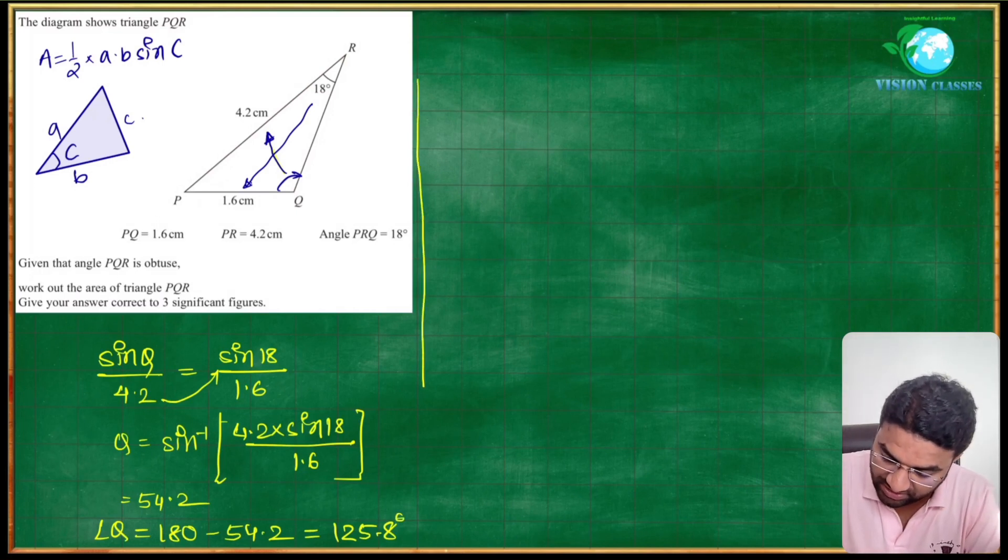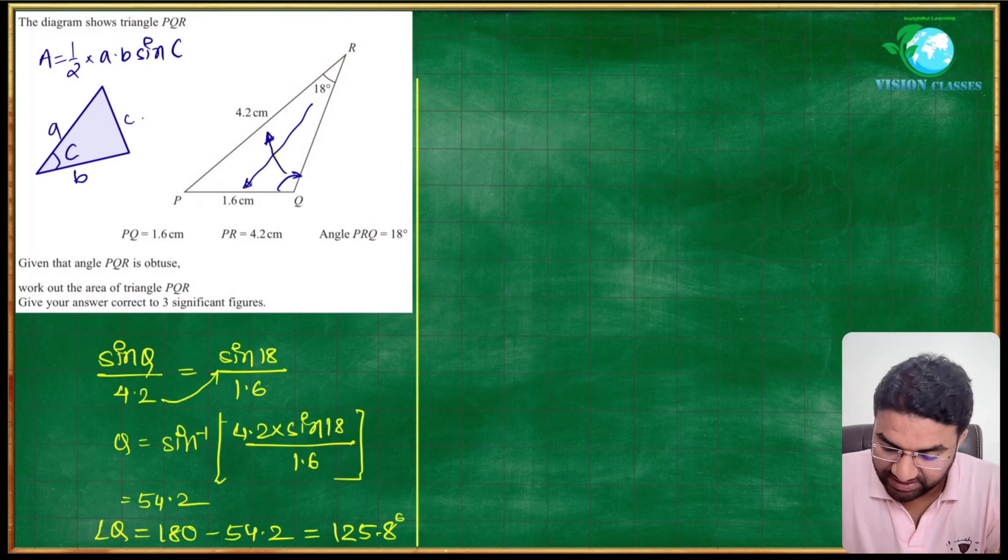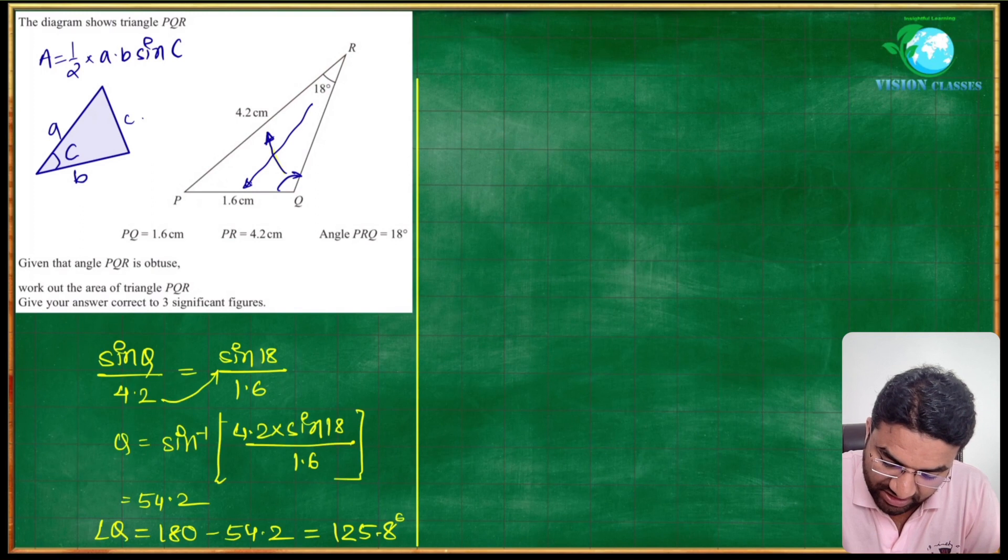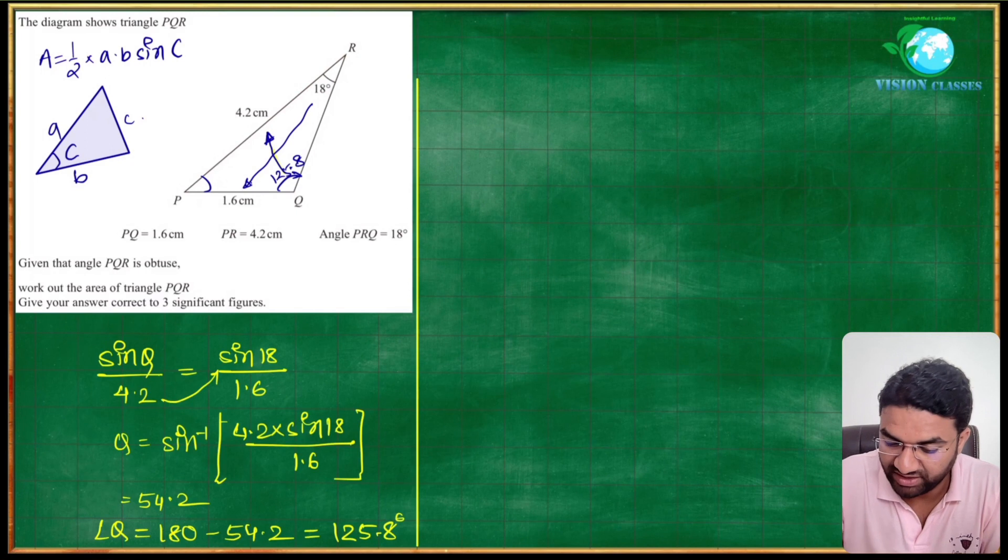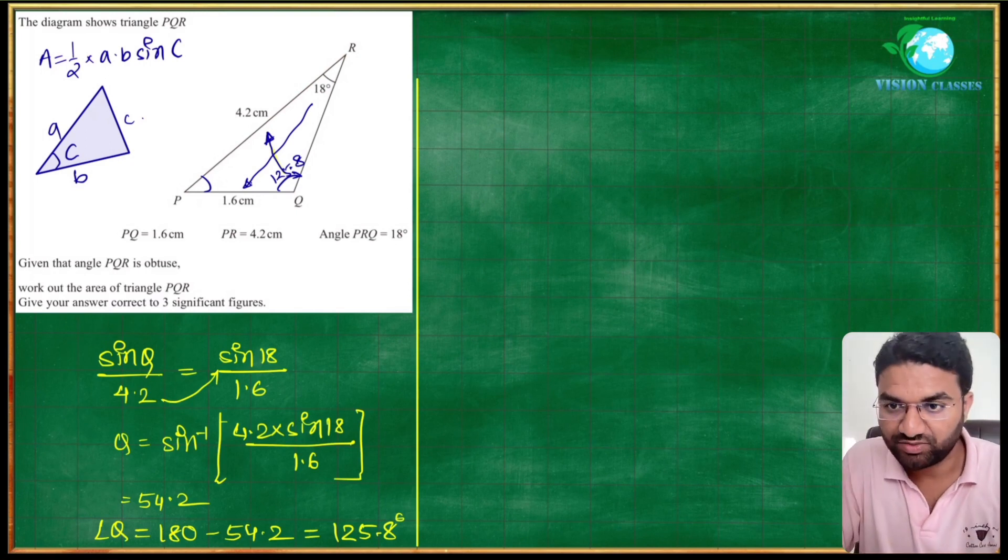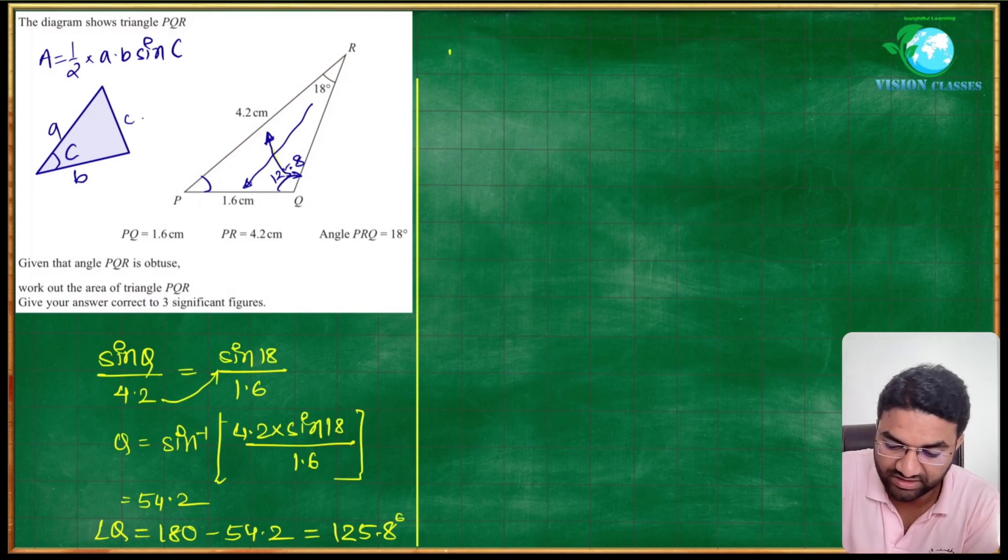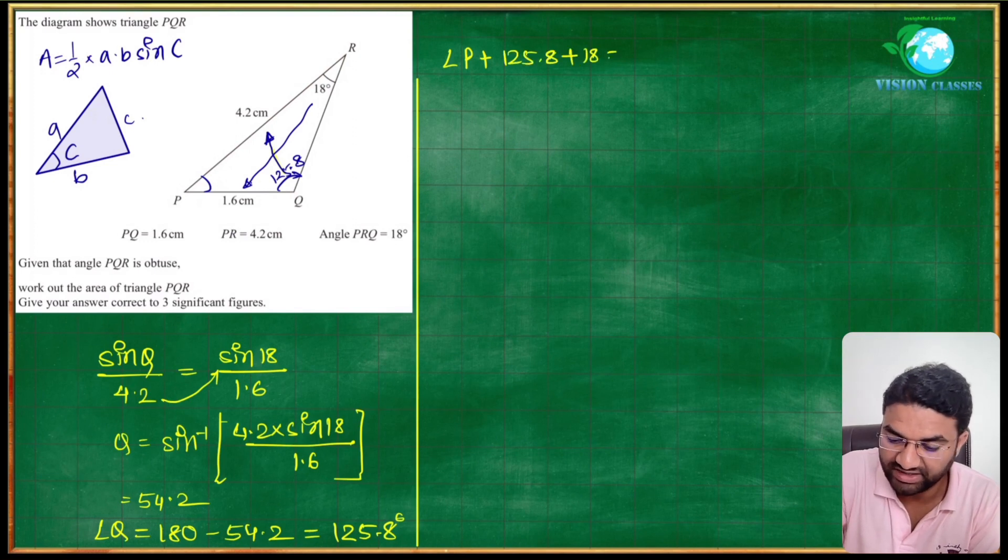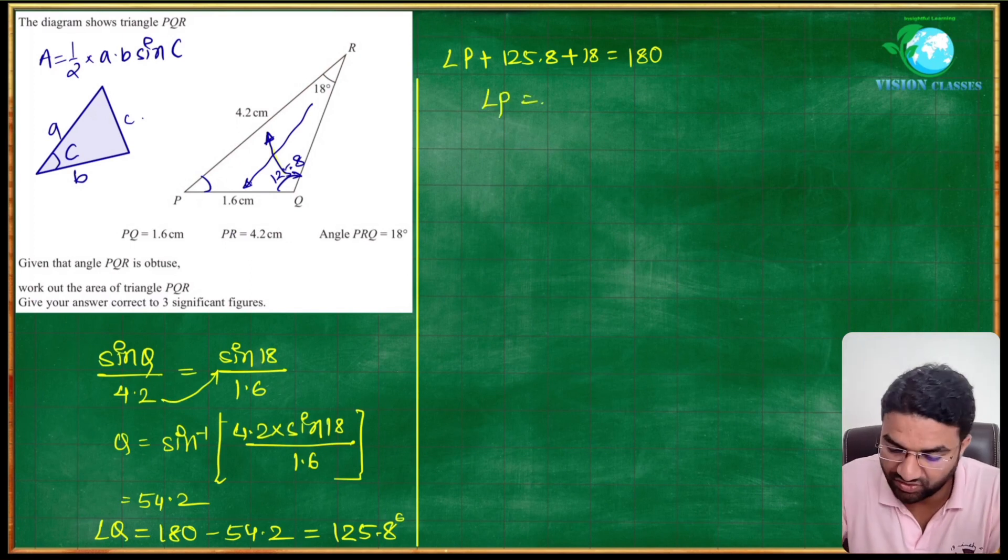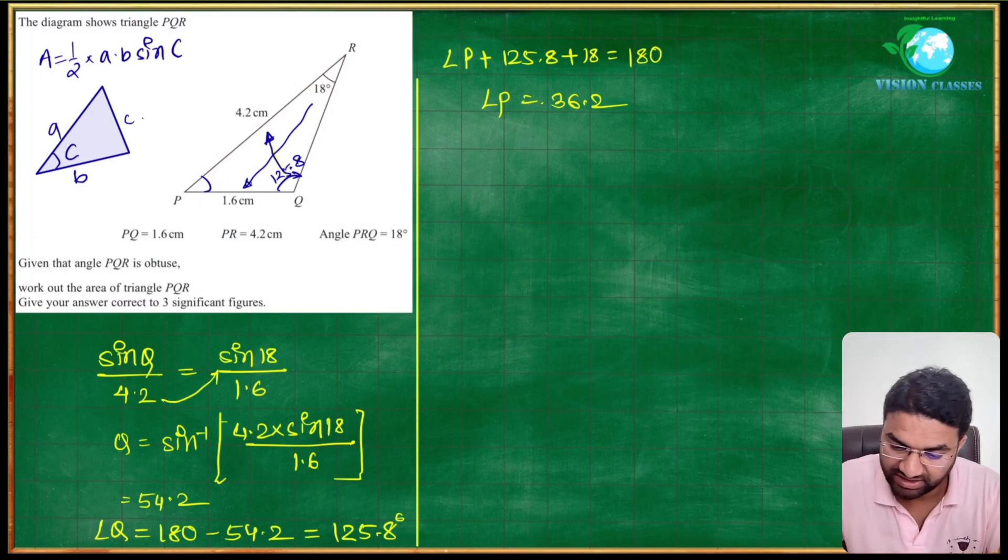So we got angle Q as 125.8, and we can find out angle P using the angle sum property of triangle, which is 180 degrees. So angle P plus 125.8 plus 18 equals 180. Transfer to the right hand side, so you will get around 36.2 as angle P.